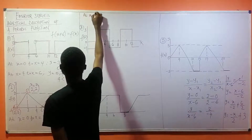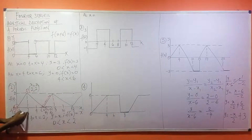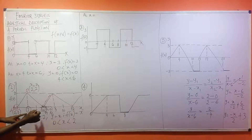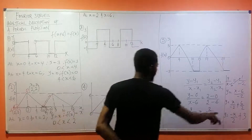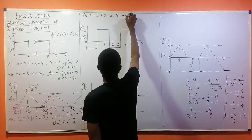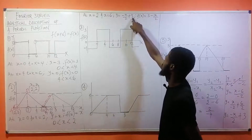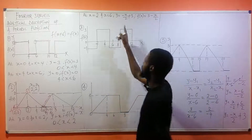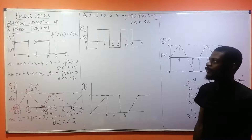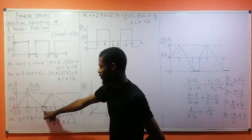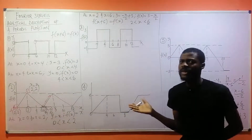This occurred at 2 < x < 6. So I can rewrite: f(x) = 3 − x/2 for 2 < x < 6. Since the period is six, we have f(x + 6) = f(x). That completes the analytical description of this function.